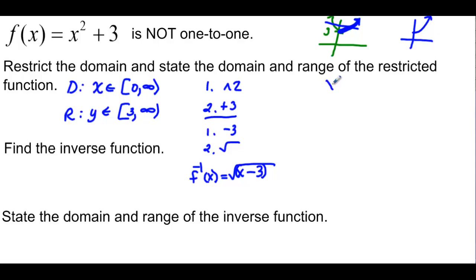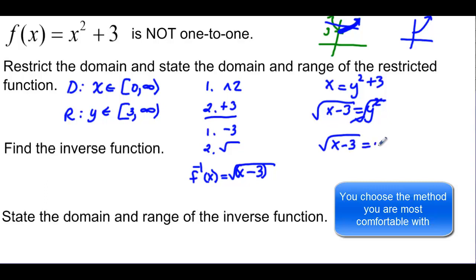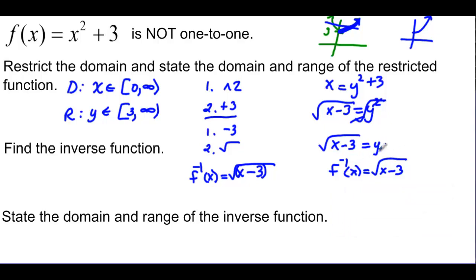The other way: you would say that x equals y squared plus 3, and solve for y. So x minus 3 is equal to y squared. Now we're ready to take the square root of both sides to get rid of the square, because the square and the square root cancel. So we have the square root of x minus 3 equal to y. So f inverse of x equals the square root of x minus 3. Remember, y and f of x — even if it's f inverse of x — they mean the same thing.